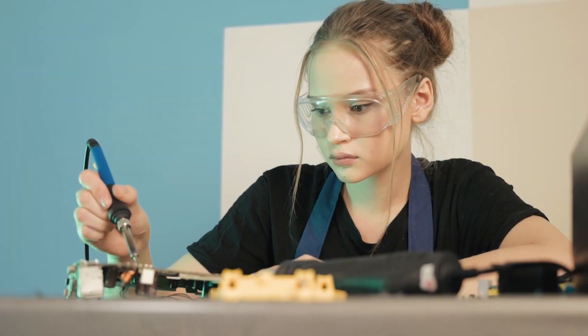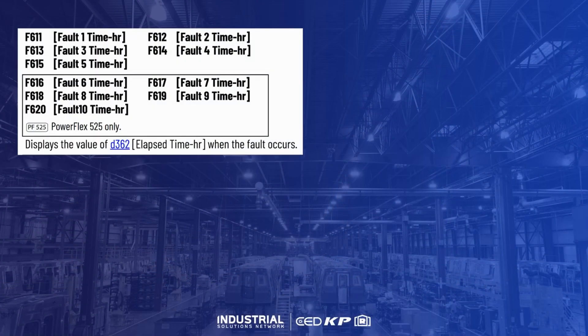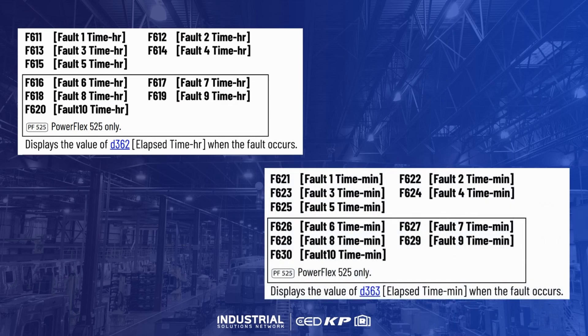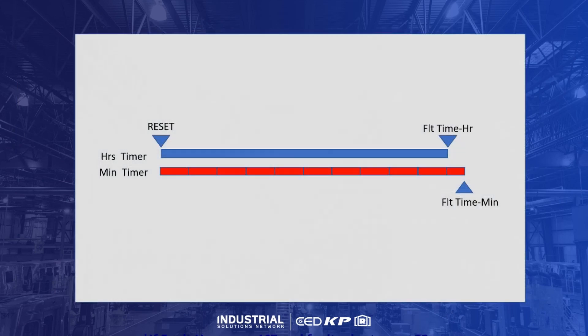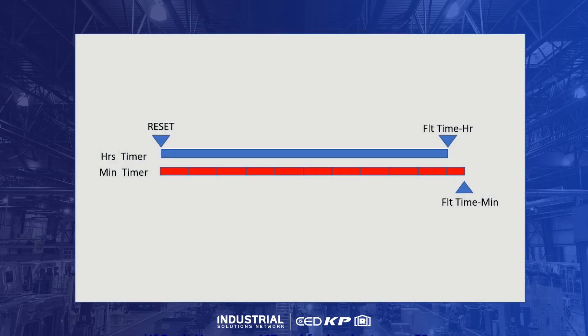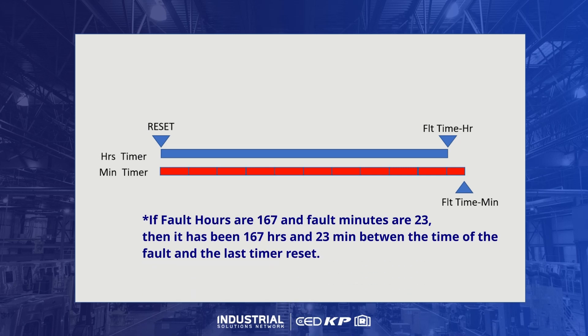Let's take a closer look at the associated fault code parameter data. Starting with the timestamp data, we see that it's divided between hours parameters and minutes parameters. Each parameter will provide the hour and minute timestamp for the associated fault. The fault hour timestamp provides the number of hours between the drive's timer last being reset and the time of the fault. The minute stamp provides the number of minutes from the hour. By noting the hour and minute timestamps between faults, a picture of event frequency may be built.